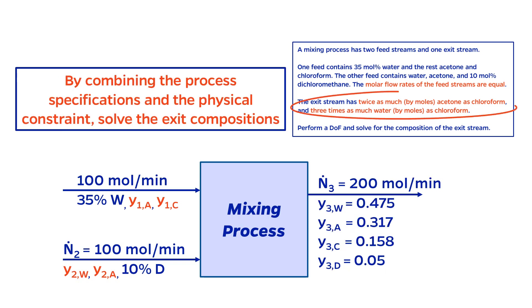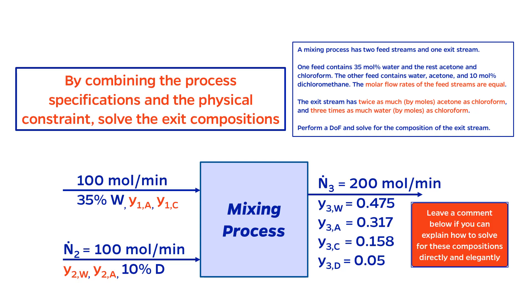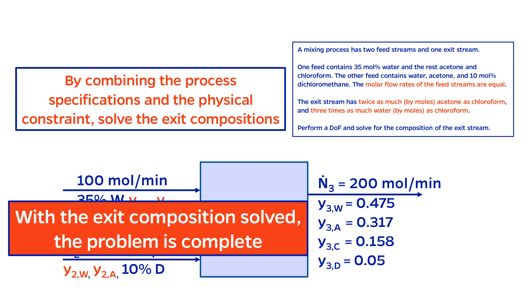Next, we can combine the two process specifications and the physical constraint on the exit stream to solve for the composition of the exit stream. I will leave the details for you to work out, but leave a comment down below if you think you have an elegant way to explain how to solve for these compositions. Now that the exit composition is solved, we have satisfied what the problem asks for, so we can stop solving.